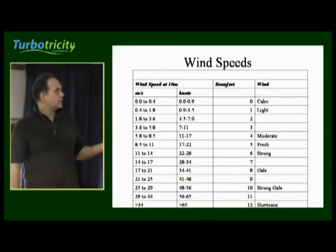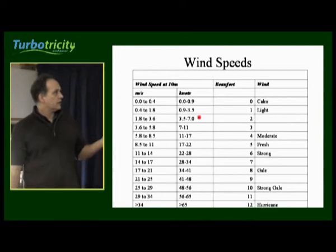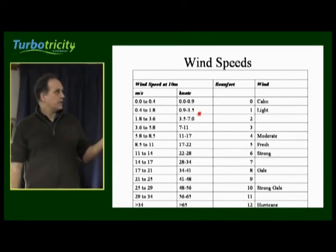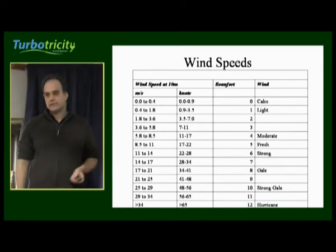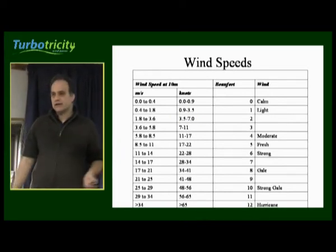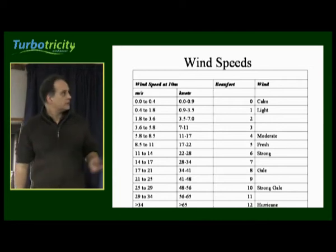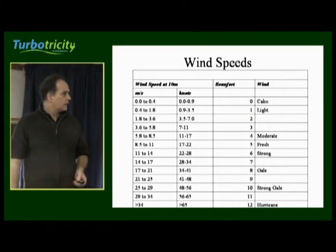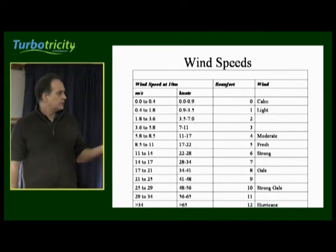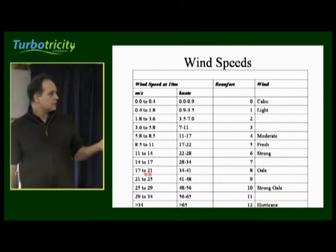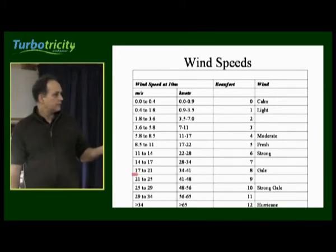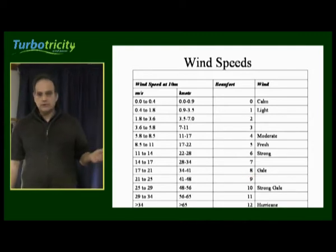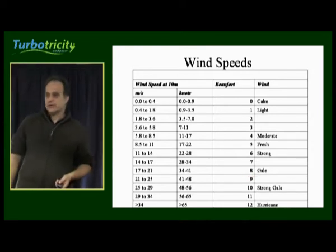Most turbines start spinning and producing useful electricity at between three and three and a half metres per second, which would be the upper end of Force 2. And a lot of turbines will cut themselves out at a wind speed of between 17 and 21 metres per second, which is Gale Force 8.